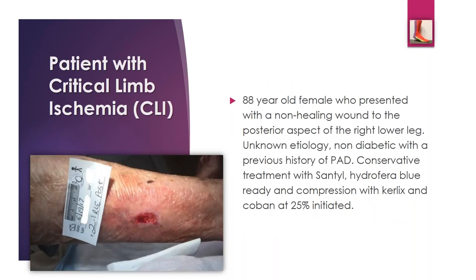This patient is someone I saw at the wound care center. She had critical limb ischemia — an 88-year-old female with a non-healing wound on the posterior aspect of her right lower leg. She eventually told us that when she was attempting to put on her compression stockings, she put her thumbnail through her leg, which initially caused this wound. She had no diabetes but had known peripheral arterial disease. She didn't want an angiogram initially, so we started conservative treatment with Santyl to debride the wound, Hydrofera Blue to control microbial levels, and mild compression with Curlex and Coban at 25%.